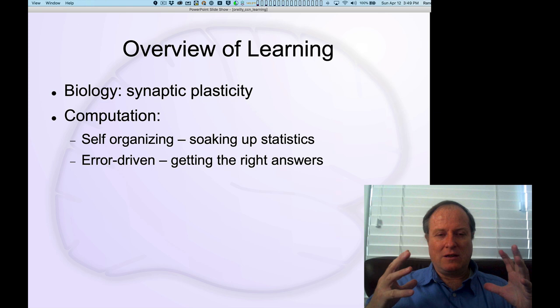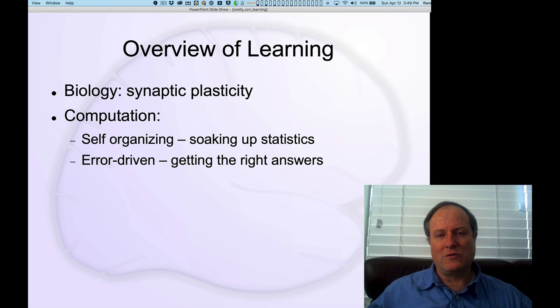Whereas self-organizing learning is simply locally computing these statistics that may or may not be actually that useful in terms of shaping the behavior of the organism itself. People have separately investigated these two different types of learning in a large number of computational models over the years. What we found in our research is that actually combining both of those two forms of learning tends to work better than either one alone. We'll start by looking at each one separately and then show how we can understand the benefits of integrating them.